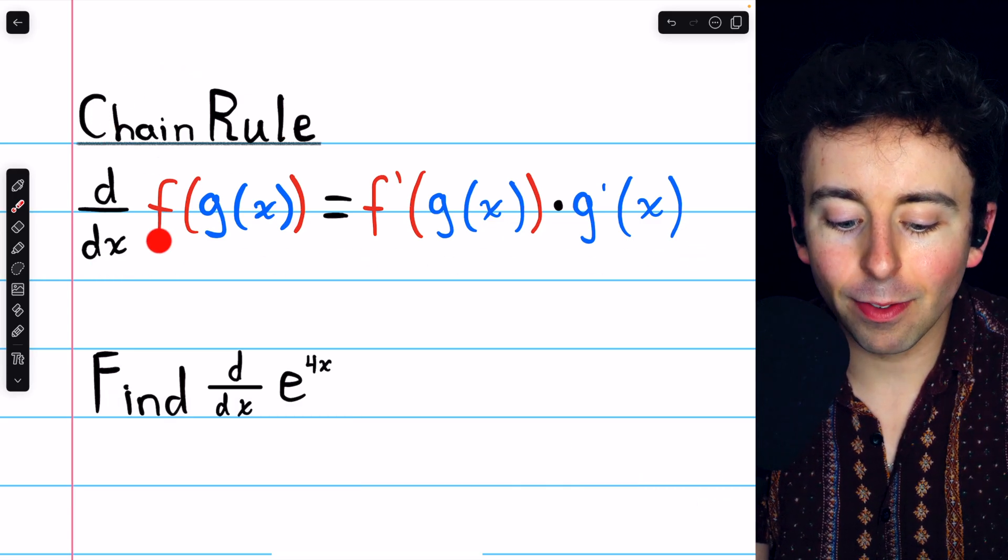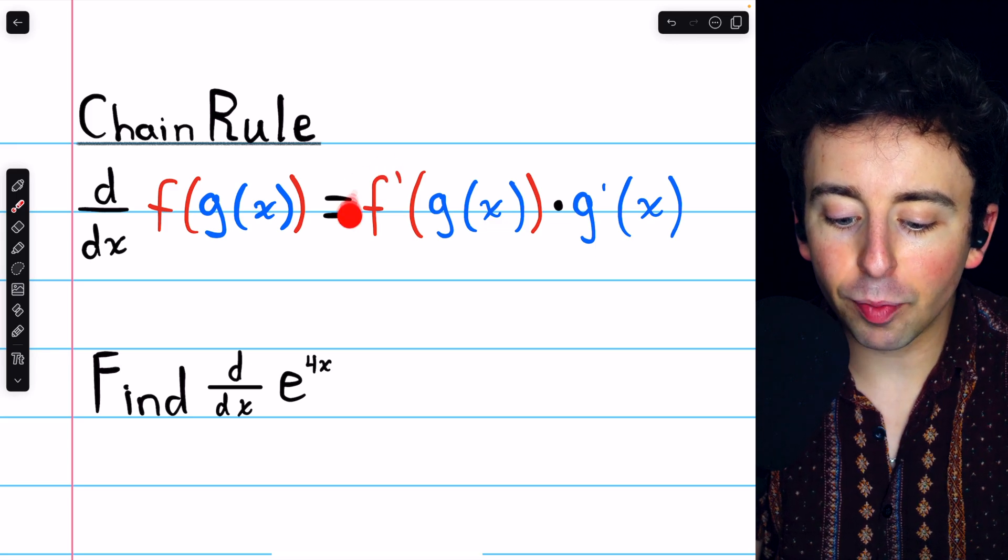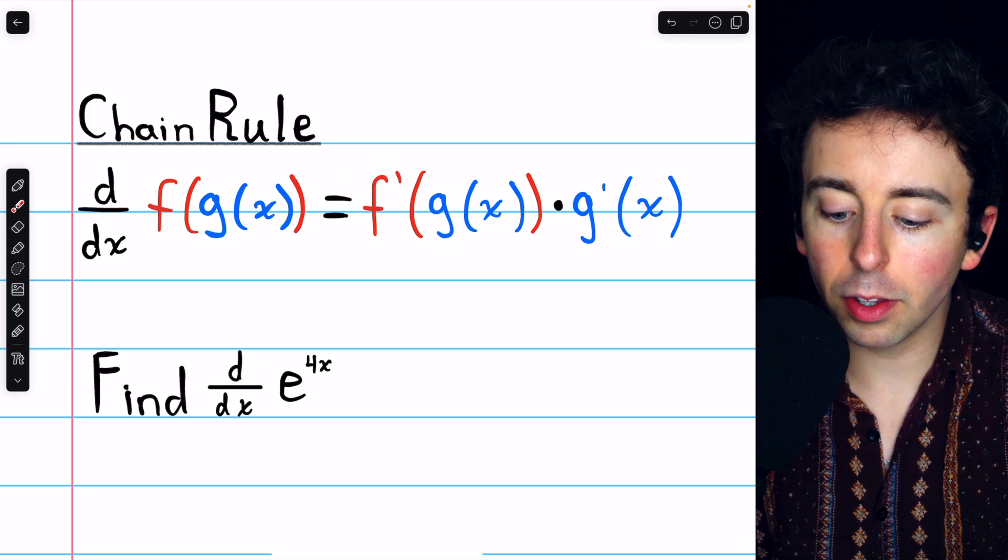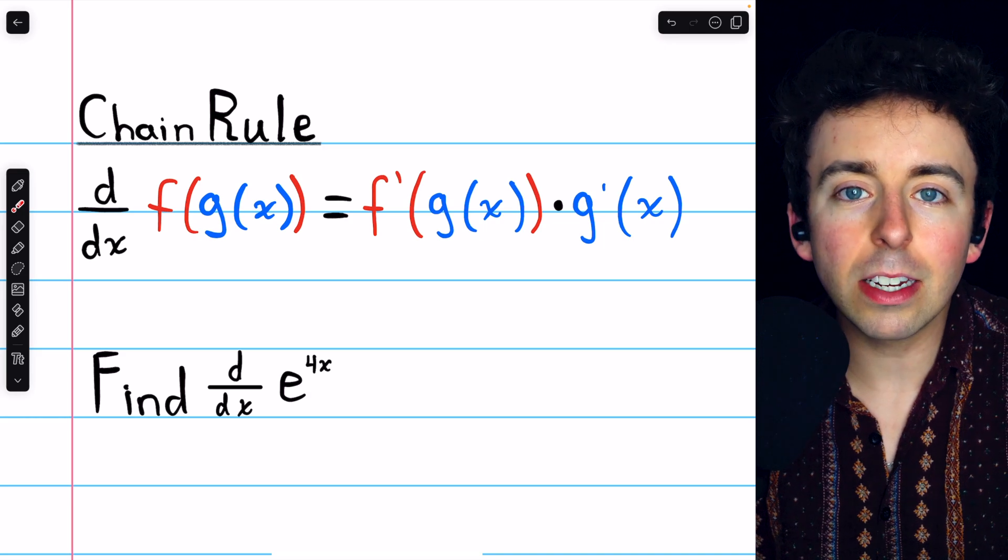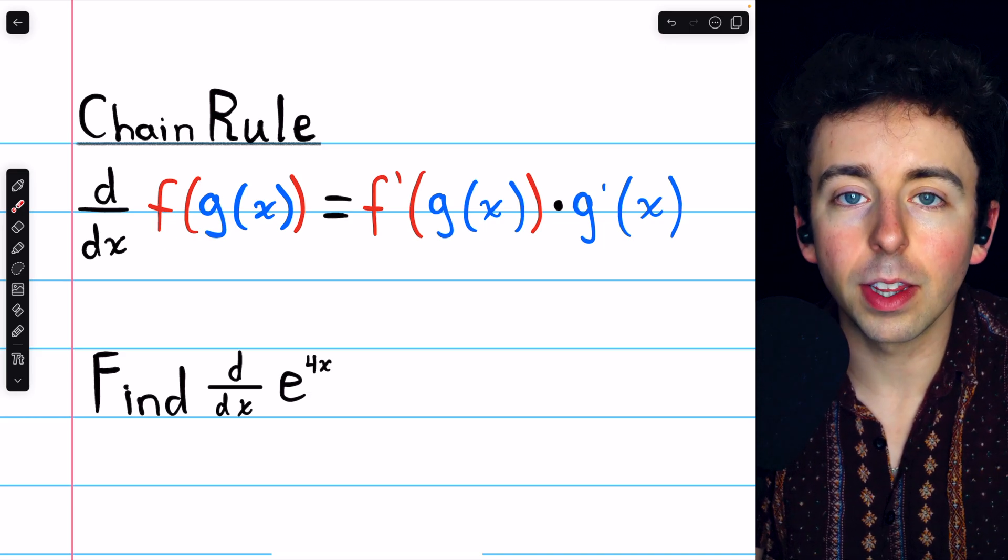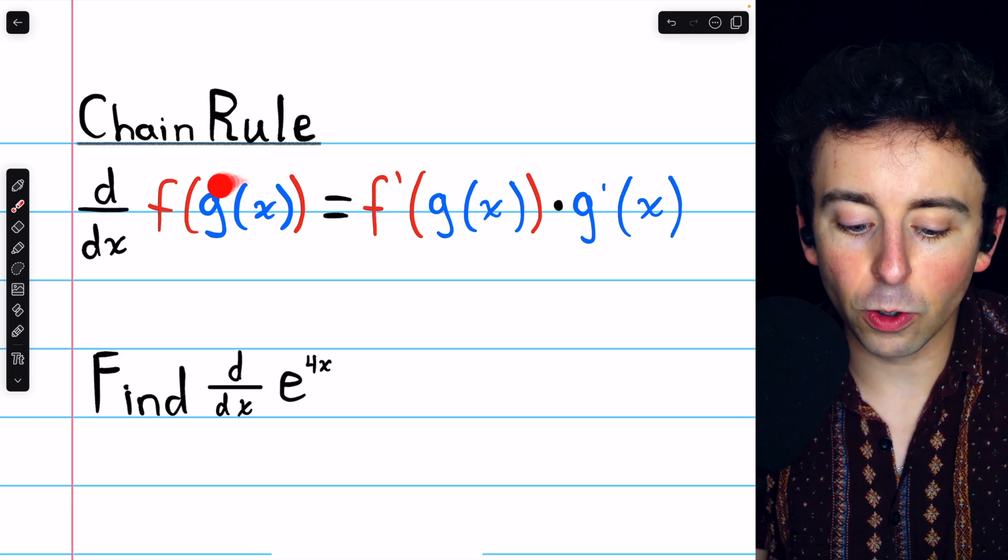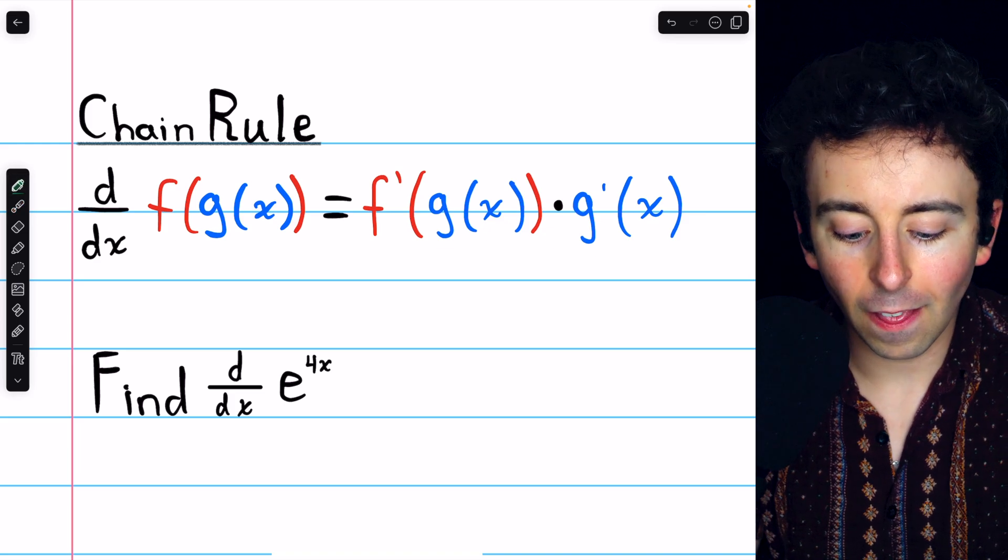The derivative of f of g is f prime of g multiplied by g prime, so we need to identify our f, the outside function, and our g, the inside function.